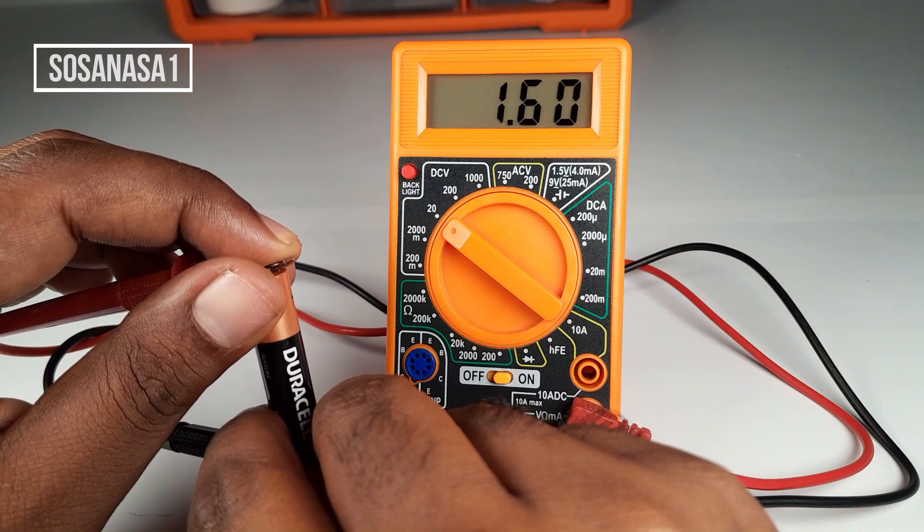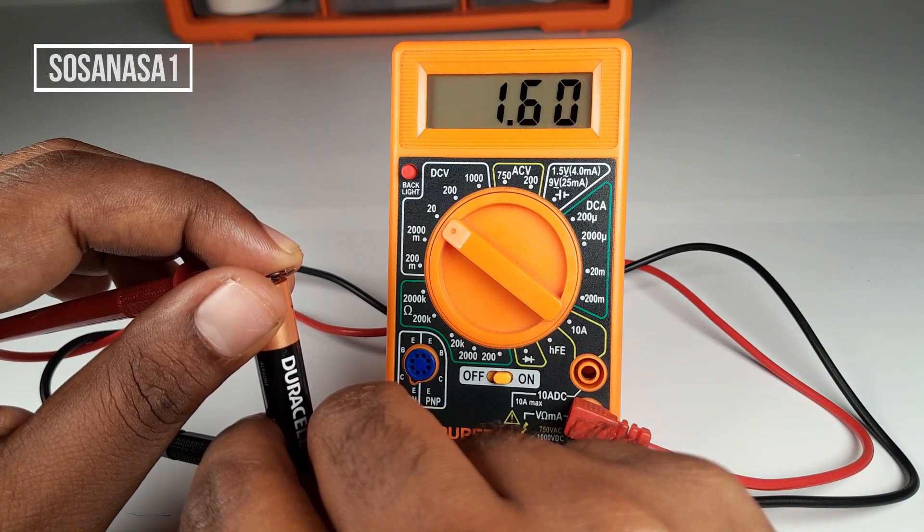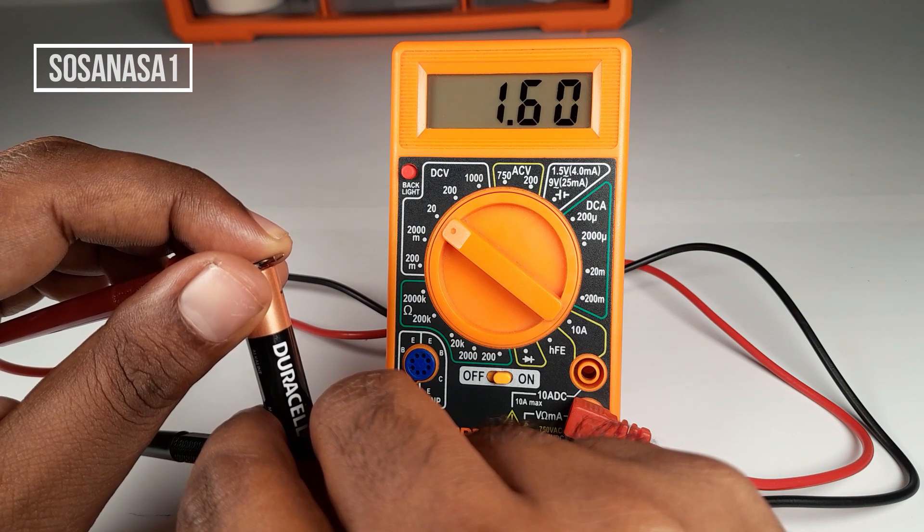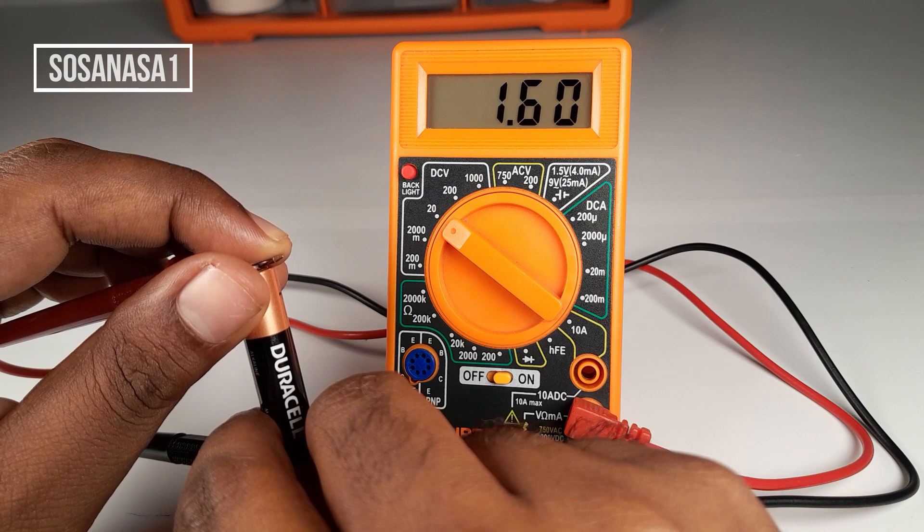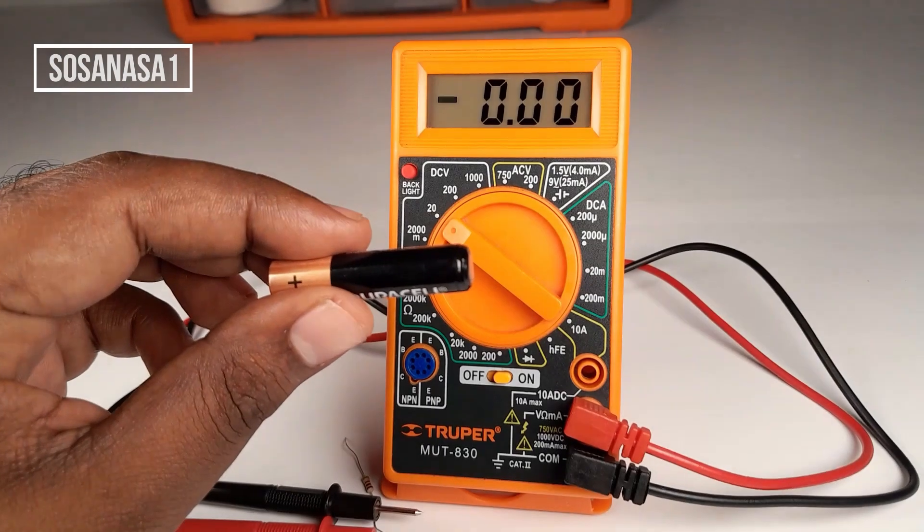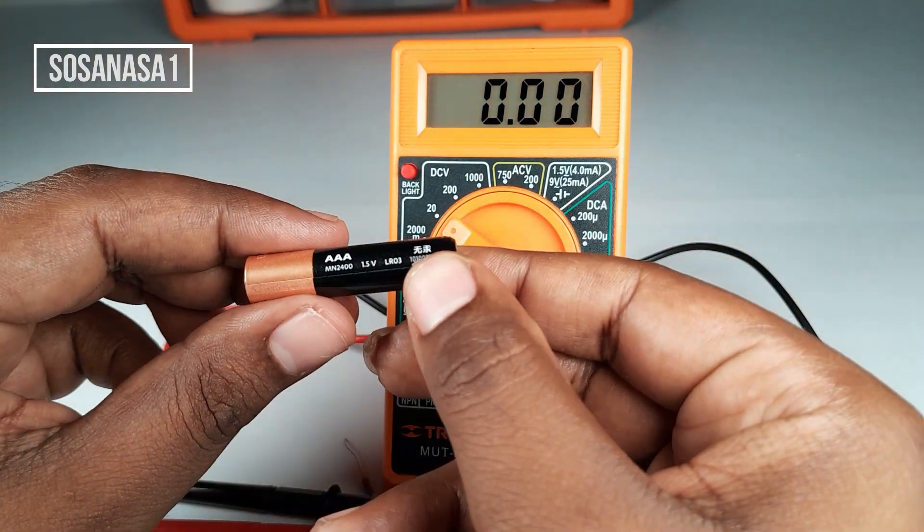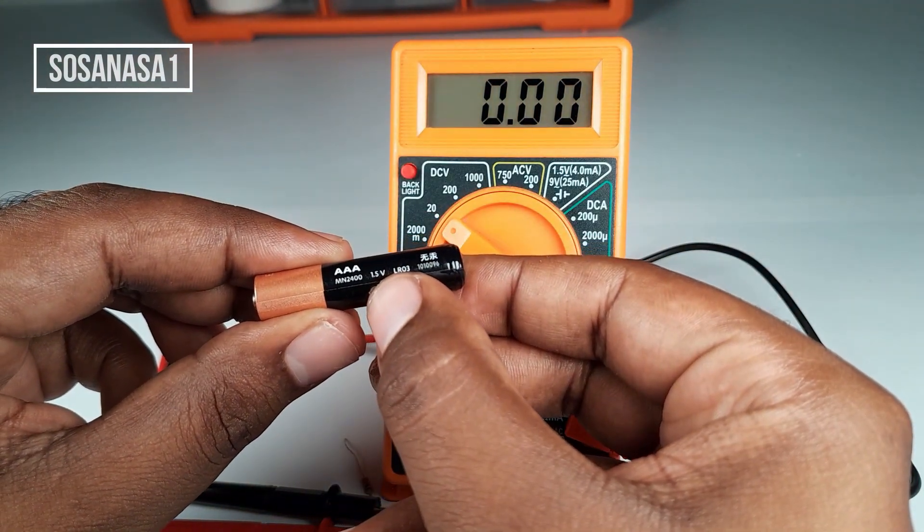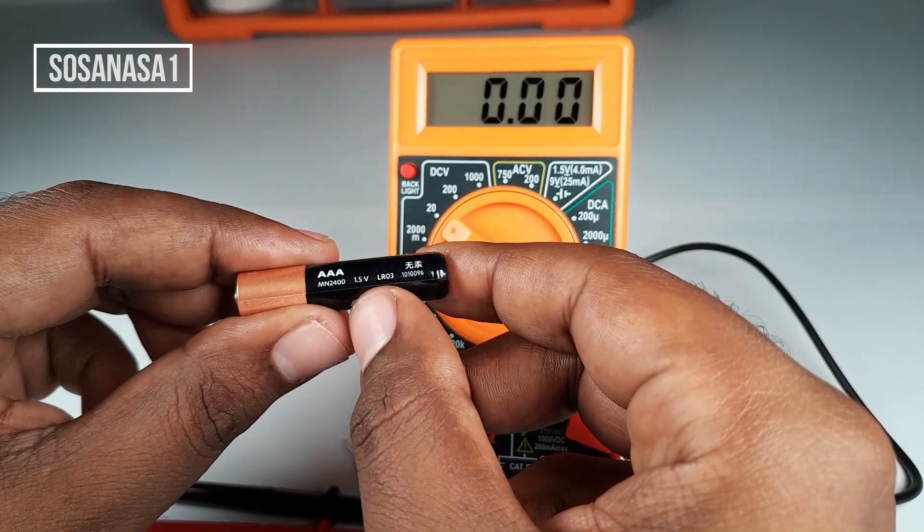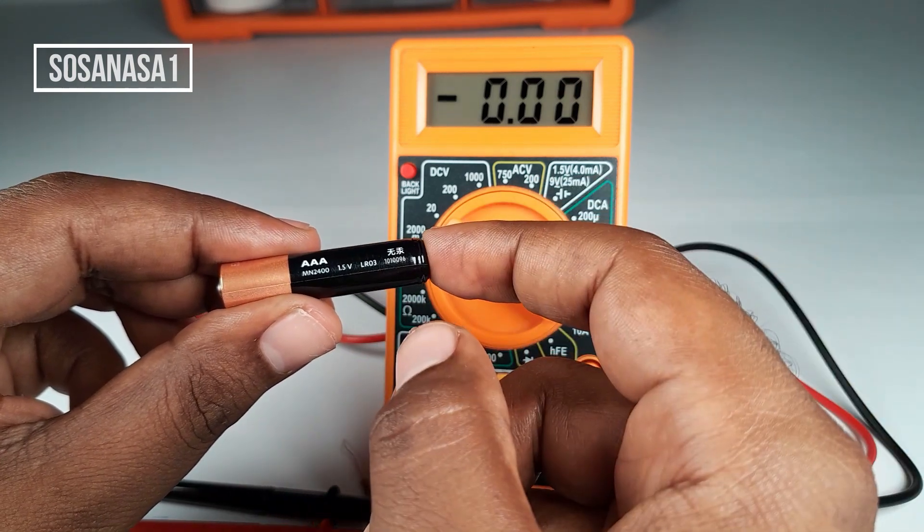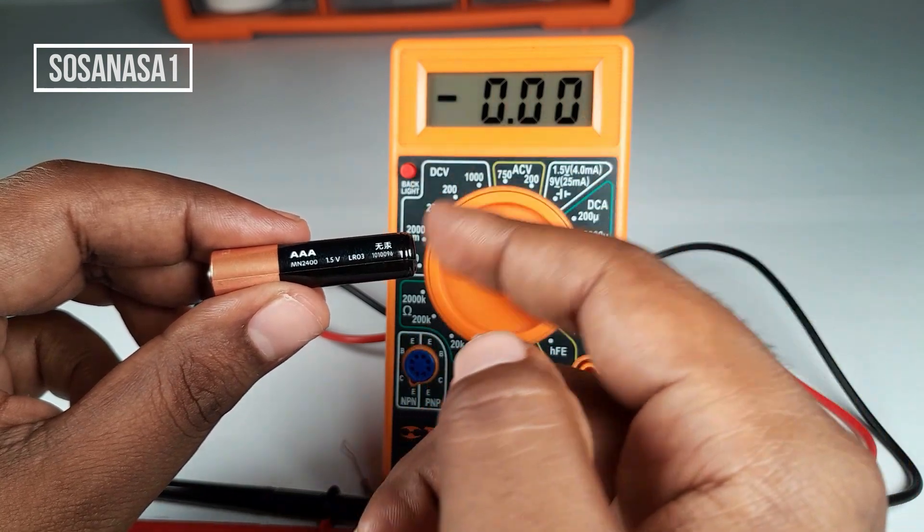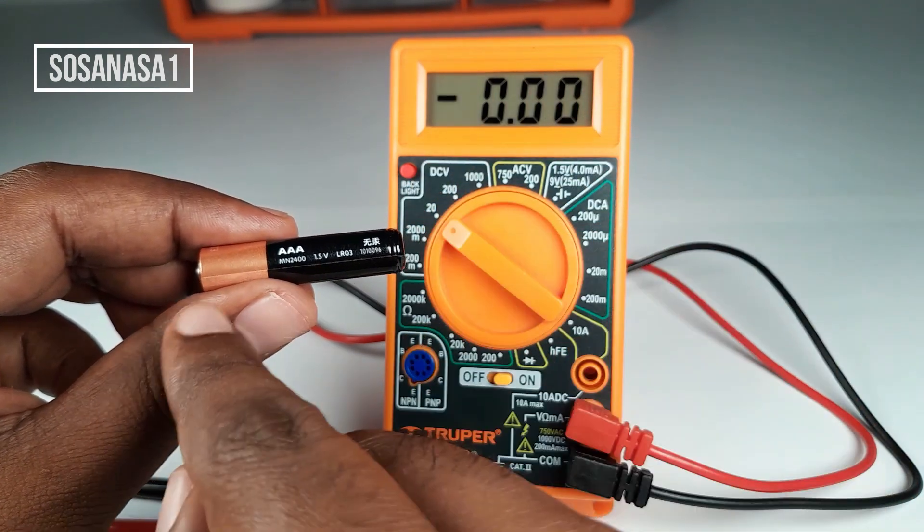Connect the positive probe and watch the digital multimeter. In this case, this battery has 1.6 volts, which means this battery is full of charge. If you see here on the battery, 1.5 volts, and the number on the multimeter screen was 1.6 volts, it means this battery is full of charge because the voltage inside this battery is higher than the number on the battery.